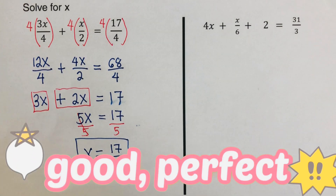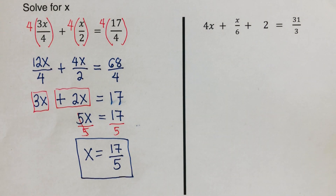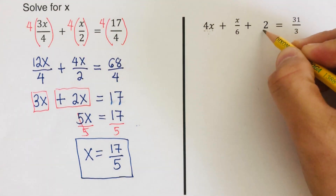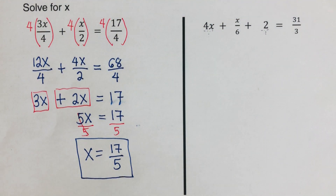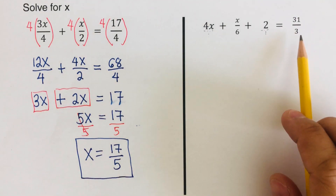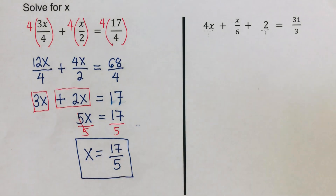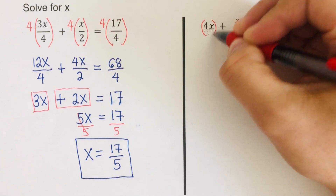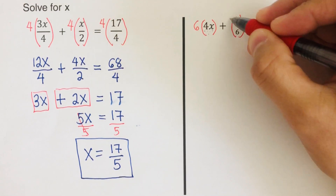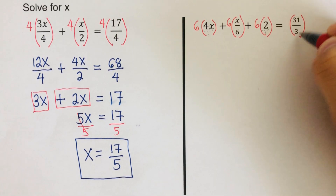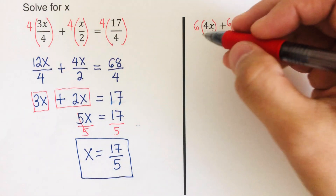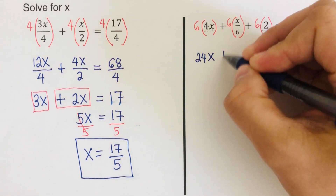Let's move on to the next problem. The denominators here are 6 and 3, because 4x and 2 have invisible denominators of 1. We need a number divisible by both 6 and 3 — that number is 6, so our LCM is 6. We will multiply all terms by 6.